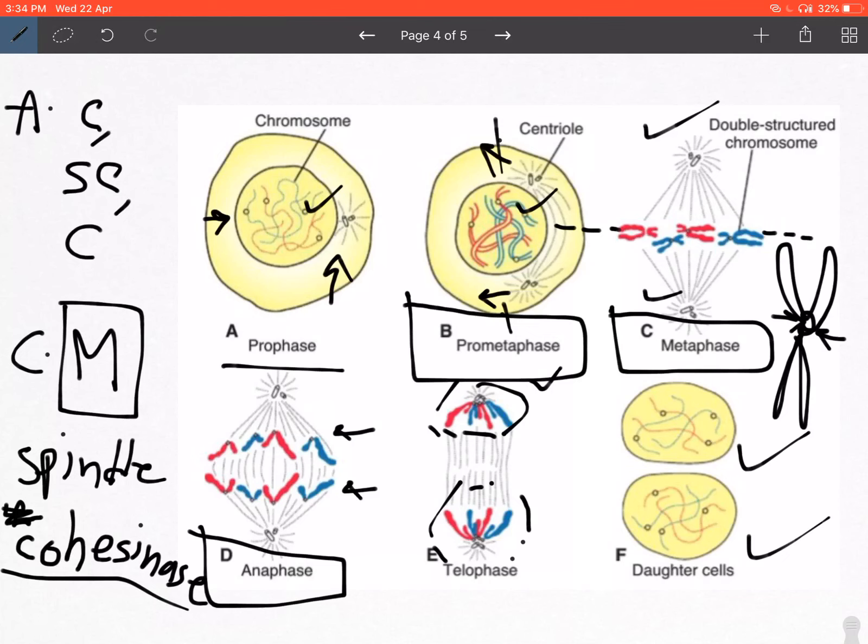In certain processes like oogenesis, which is obviously going to be discussed in meiosis, the two cells are not of equal size. One of the cells is functional and the other is left out as what is known as a polar body. We will talk about that in the lecture on oogenesis.